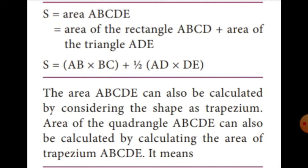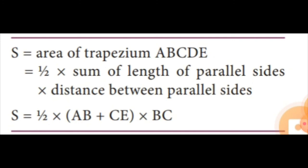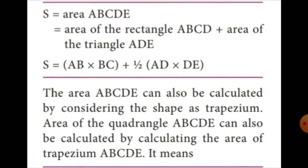The area of ABCDE can also be calculated by considering the shape of a trapezium. The area of the trapezium ABCDE equals half times the sum of the lengths of the parallel sides times the distance between the parallel sides. That is: half into AB plus CE into BC. This is the way to find the area of the trapezium — you can choose whichever method is easier.